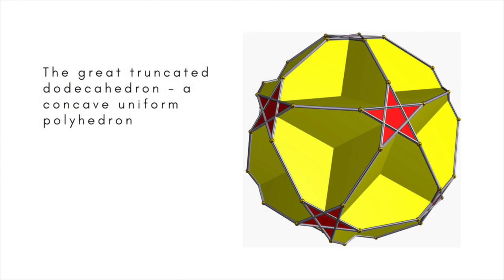A concave uniform polyhedron is a uniform polyhedron obtained by relaxing the conditions used to produce the Archimedean solids, which have regular convex faces and identical convex vertices, to allow both non-convex faces and vertex types, as in the case of the Kepler-Poisson solids. The condition that every vertex must be identical but the faces need not be gives rise to 53 non-convex uniform polyhedrons. An example is the Great Truncated Dodecahedron, obtained by truncating the corners of the Great Dodecahedron at a depth which gives regular decagons.